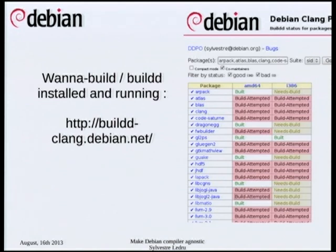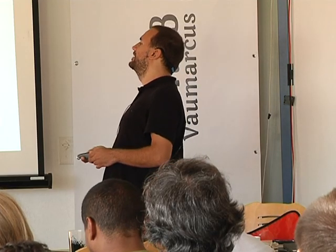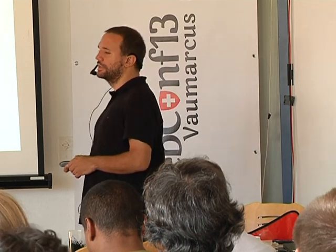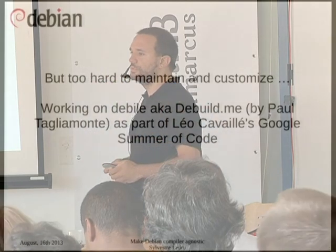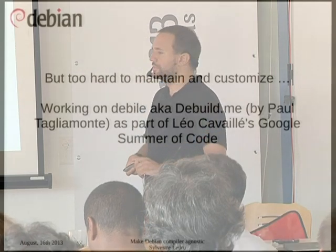That's not the easy part. We did the WannaBuild and BuildD installation and tried to get in touch with the folks at Debian ports, but they said their server is full and they cannot add a new architecture. So we decided to install it ourselves and deployed it on buildd-clang.debian.net. Unfortunately, it was too hard to maintain and customize — we had so many issues that it was not a good solution. We were spending so much time on DeBuildD and WannaBuild and were quite frustrated.